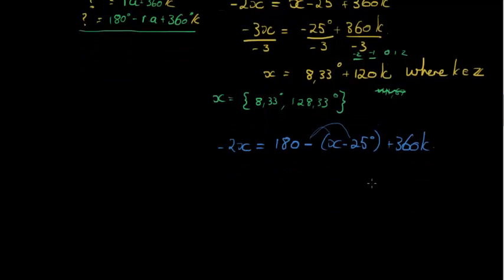And we see that this simplifies. This is negative x, so I must add an x on both sides to get it to the other side. So that I have negative x is equal to 180. Negative 25 is multiplied with that negative to make it positive 25. So this becomes 205 degrees plus 360 times k.